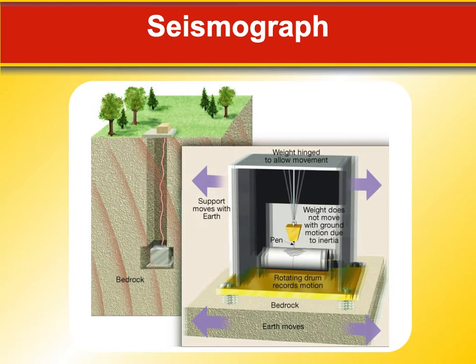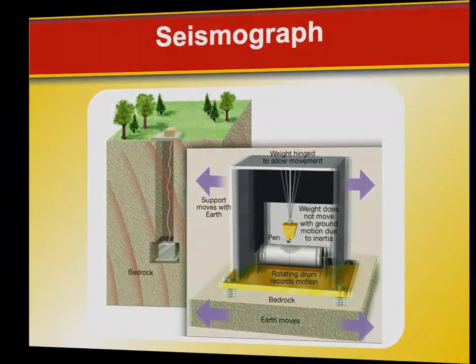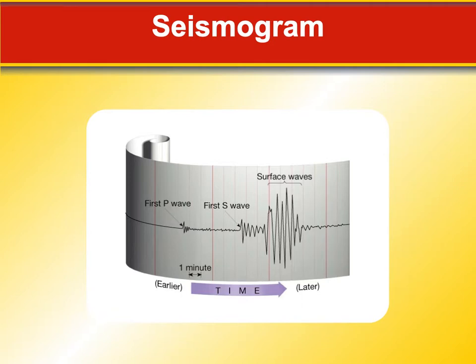A seismograph typically has a rotating drum with paper continuously feeding past it. There's a weighted pendulum, and when shaking occurs — since the instrument is bolted into bedrock — the paper wiggles back and forth while the pen writes on it. You can actually determine the distance to the earthquake by measuring the difference in arrival times between the types of waves recorded on the seismogram.